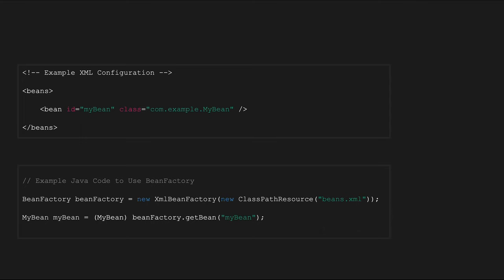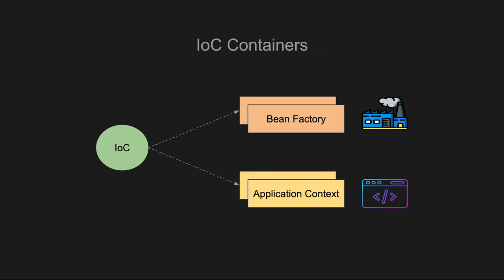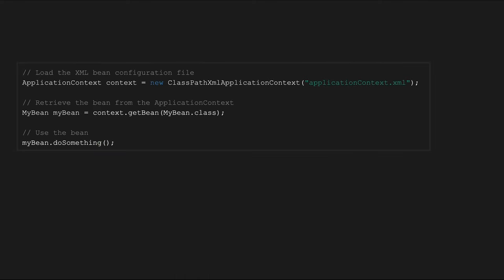On the other hand, ApplicationContext is a more advanced container compared to BeanFactory. It extends BeanFactory and provides additional features and functionality. It tends to use eager loading, meaning it eagerly creates and initializes beans at application startup, resulting in faster access to beans when needed. It includes all the features of BeanFactory and adds more advanced capabilities such as event propagation, AOP integration, and declarative mechanisms for bean instantiation. ApplicationContext also supports loading resources from various locations including the classpath, file system, and URLs, as well as publishing and handling of application-wide events.